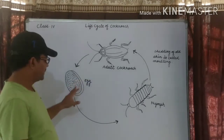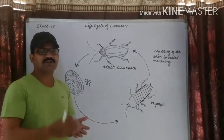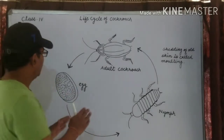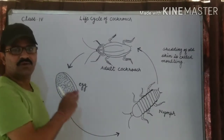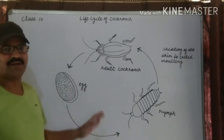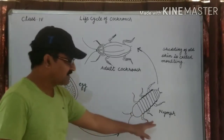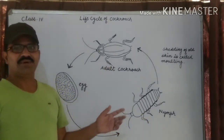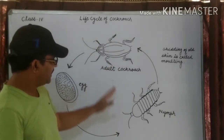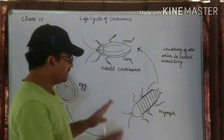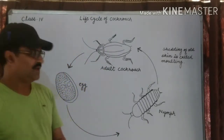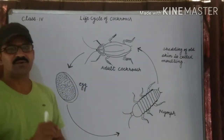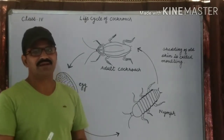The female cockroach lays eggs, and the eggs hatch into nymphs on their own — there is no need for help. The small young cockroach that hatches from the egg is called the nymph. It looks like an adult but does not have wings or reproductive organs. It sheds its skin several times and changes into an adult. An adult cockroach has wings, and when it reproduces, a new life cycle begins.